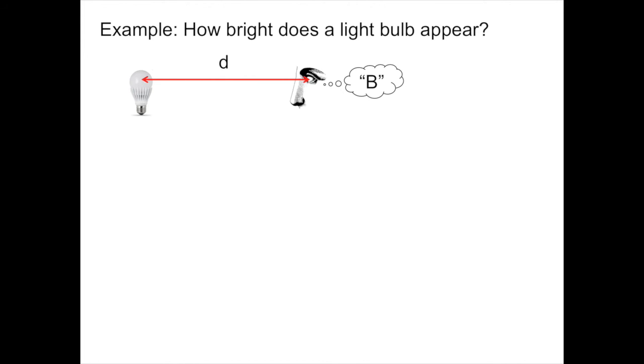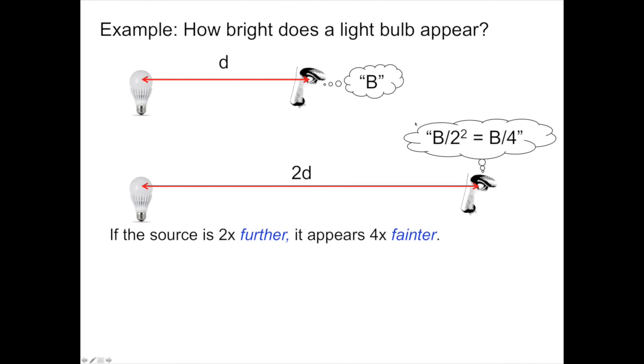Okay, now I move the light bulb two times further away, so it's now 2d apart. Okay, how bright is the light source? Brightness decreases as one over distance squared, so the brightness should be one over two squared, or one-fourth. And so classical statue says, oh, it's now one-fourth as bright when I'm two times further away. In short, if the light source is two times further away, it will appear four times fainter.